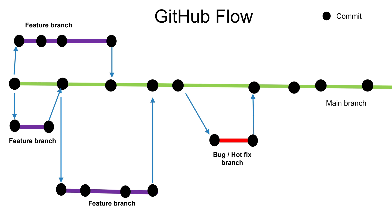The first strategy we are going to see is GitHub Flow. This is how a GitHub Flow will look like. You will have a main branch — this is a stable branch and you won't make any direct commit into this main branch. This branch is always maintained in such a way that it is always ready for deployment. If you want to make any changes in the main branch, you need to create a feature branch from the main branch.